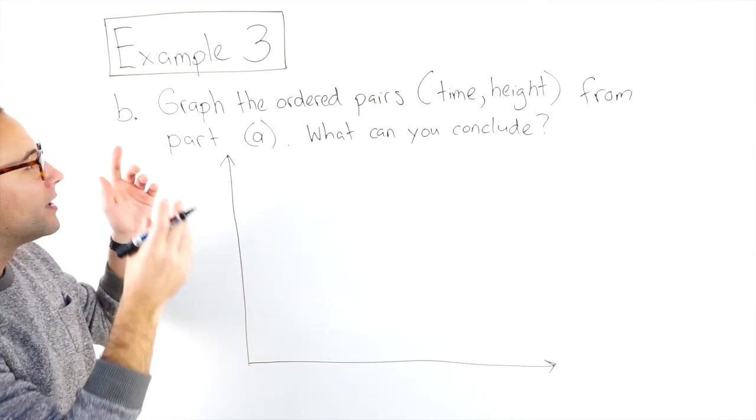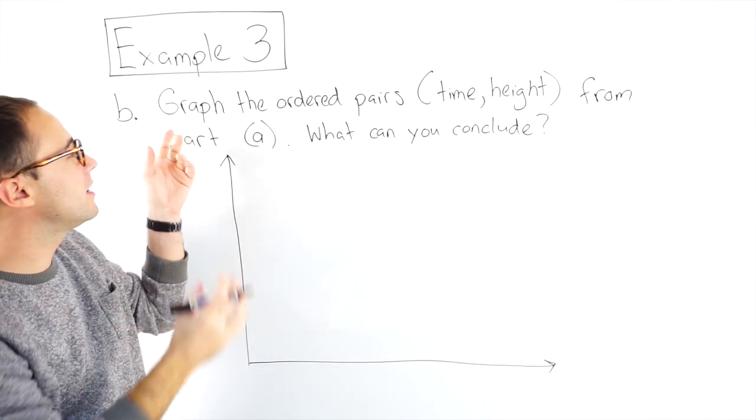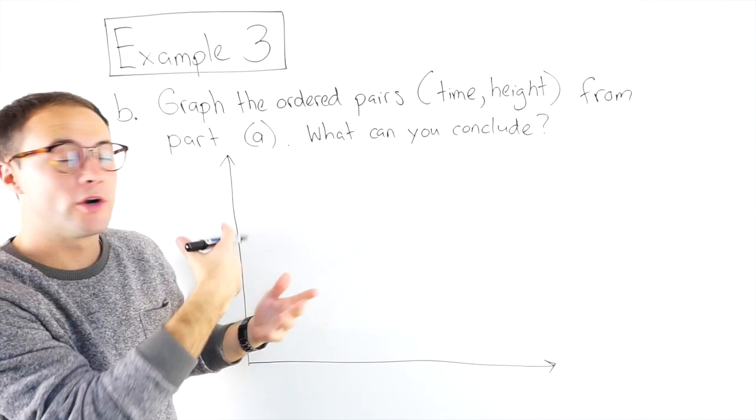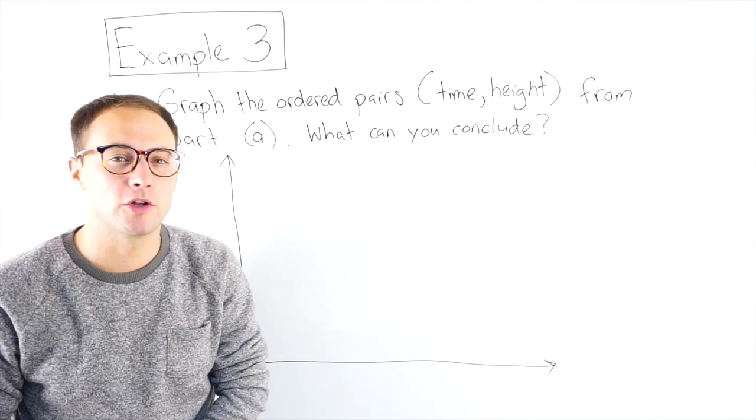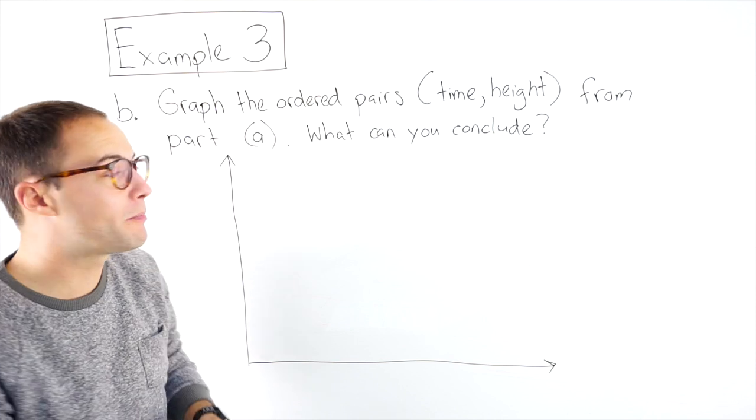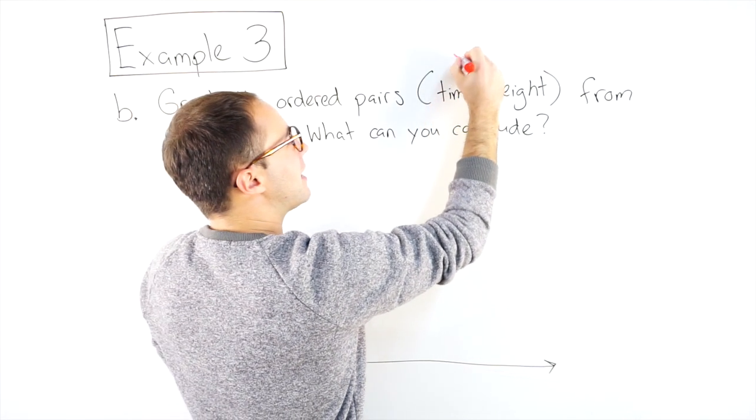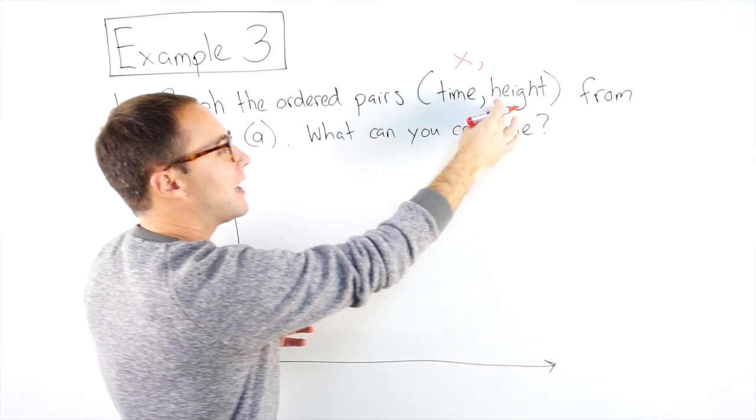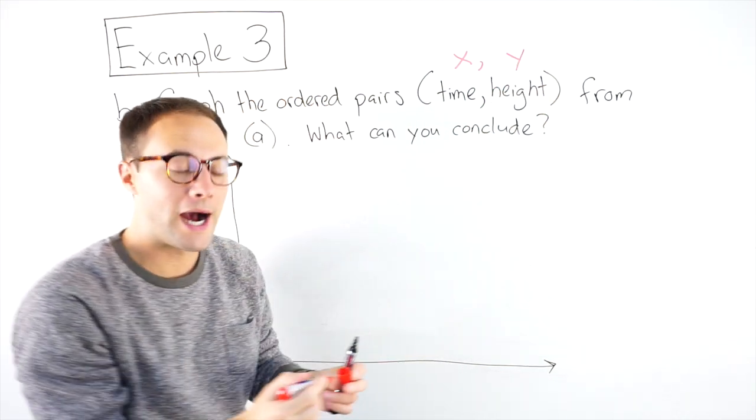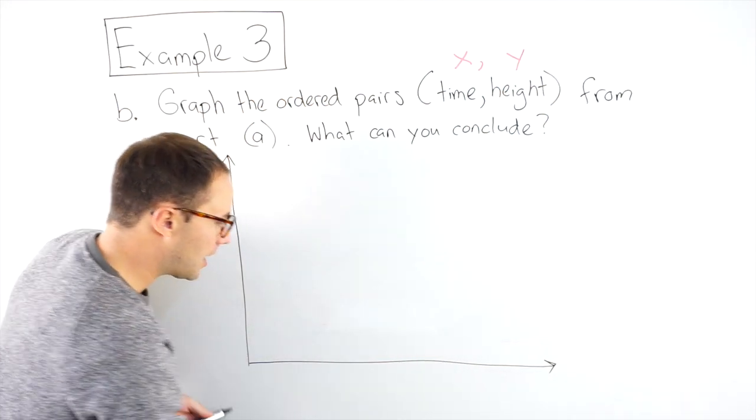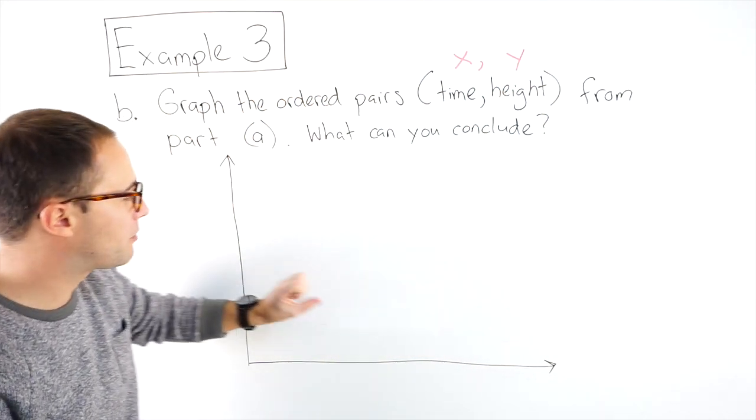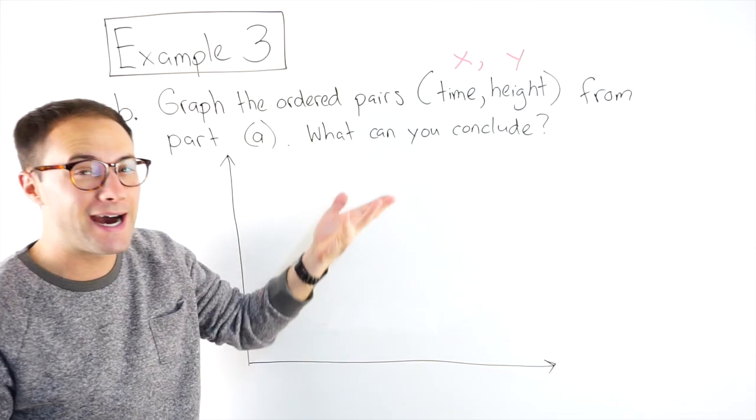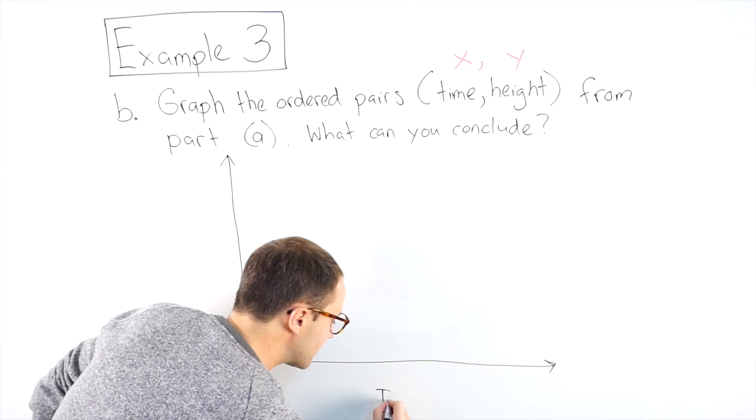Here's our last example. Part B, same example three, graph the ordered pairs, the time and then the height from part A that we already did, and what can you conclude? If we think about an ordered pair, time is going to represent my x coordinate. That's going to go along my x-axis time. And then height is going to be my y coordinate. Here is my coordinate plane. I need to label it.